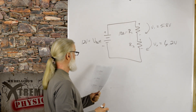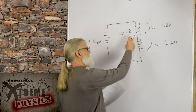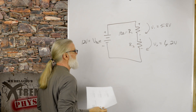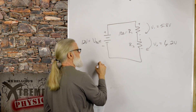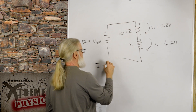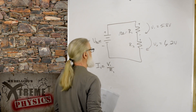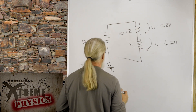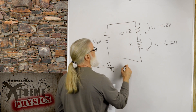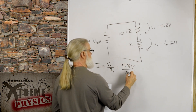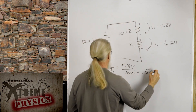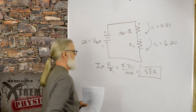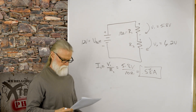If R1 equals 10 ohms, what's the current in the circuit? I know the voltage and resistance, so I can figure out the current. Since there's only one path, the current is the same everywhere. Use subscripts: I1 equals V1 over R1. V1 is 5.8 volts and R1 is 10 ohms, so the current is 0.58 amperes. Always use matching subscripts — don't just say I equals V over R with mismatched values.